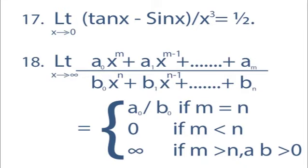Eighteenth, limit x tends to infinity of (a₀x^m + a₁x^(m−1) + ... + aₘ) upon (b₀x^n + b₁x^(n−1) + ... + bₙ) equals: a₀/b₀ if m equals n; 0 if m is less than n; and infinity if m is greater than n, where a and b are both greater than 0.